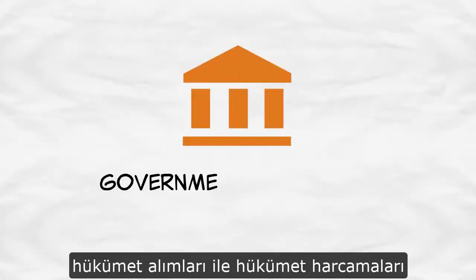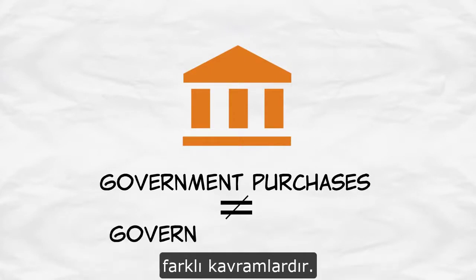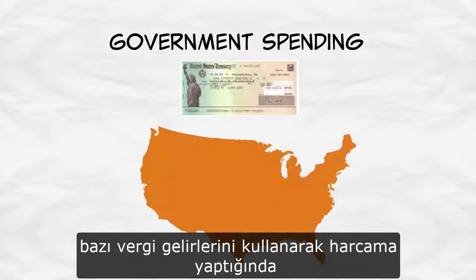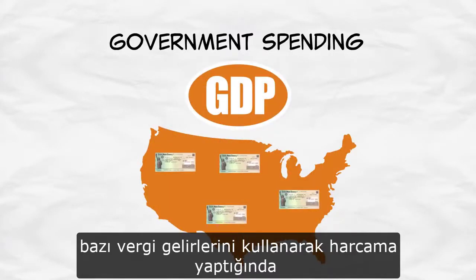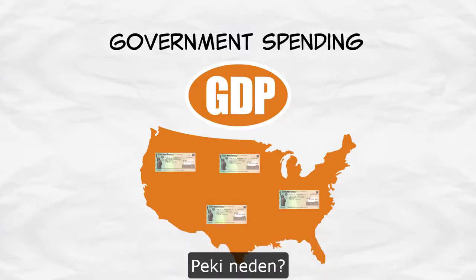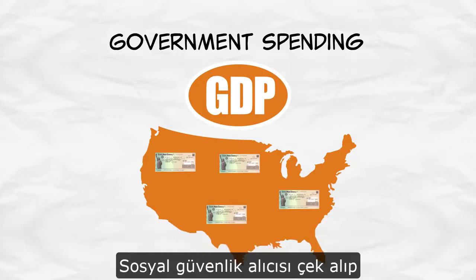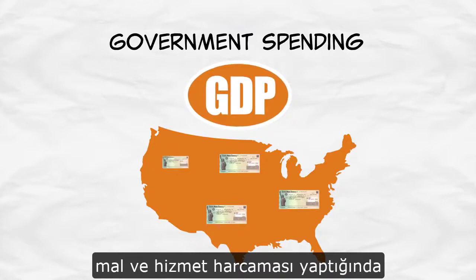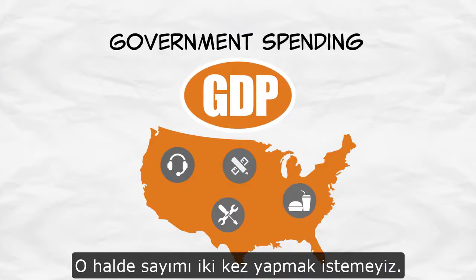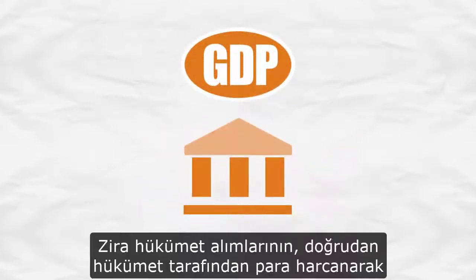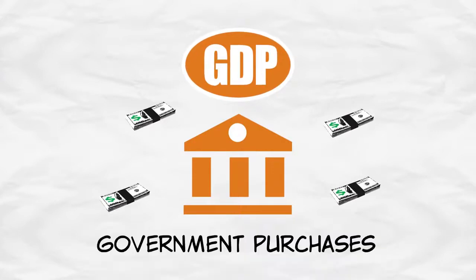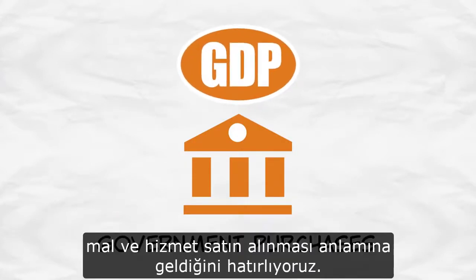It's important to remember that government purchases are different from government spending. When the government spends some tax revenue by sending out, let's say, a Social Security check, that's just a transfer. It doesn't add to GDP. When the Social Security recipient gets the check and spends it on goods and services, that does add to GDP. So we don't want to double count. Government purchases are just the money spent directly by government on goods and services.